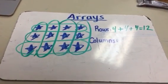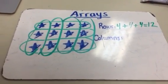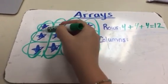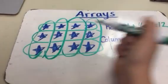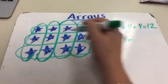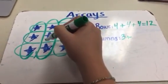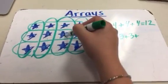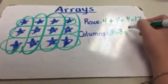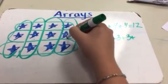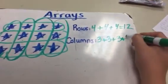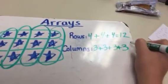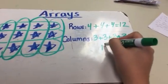Now let's do the columns. You have to count each star in each column: 1, 2, 3 — 1, 2, 3 — 1, 2, 3 — 1, 2, 3. Well, 3 plus 3 plus 3 plus 3 equals 12.